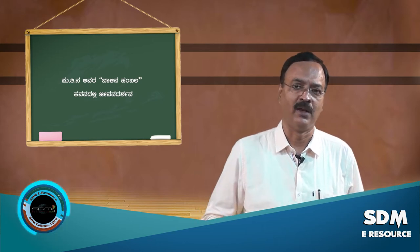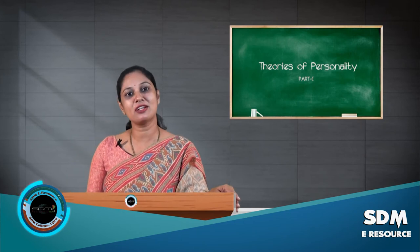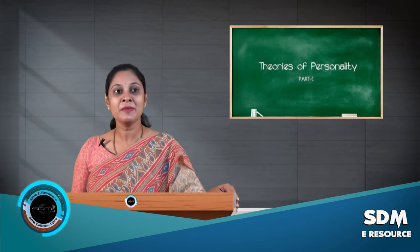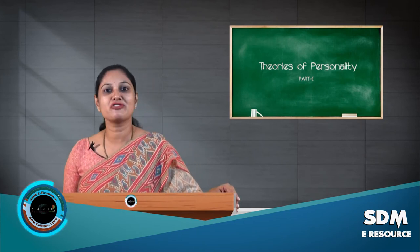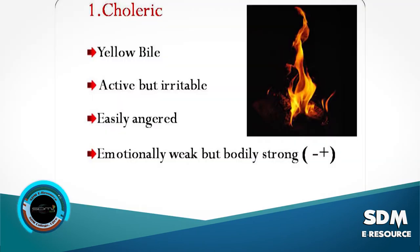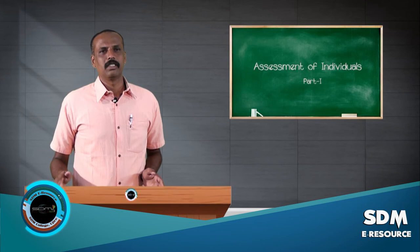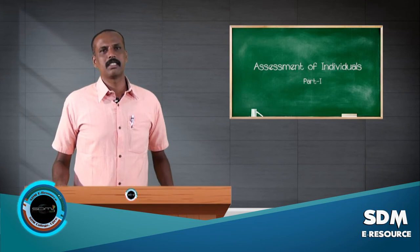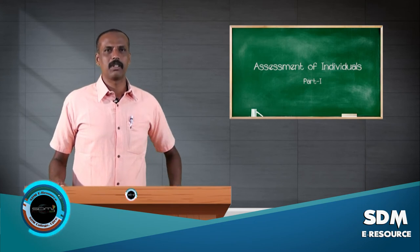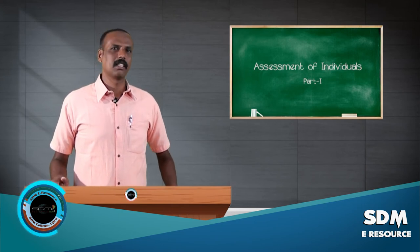The first type of personality is called the choleric kind of personality. This individual, as an SSC, is also liable to pay tax on his income.